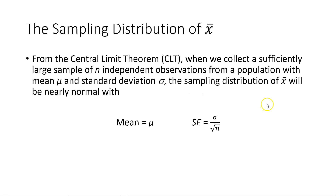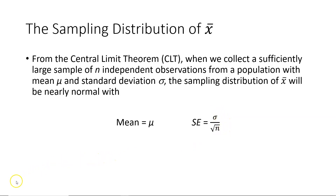Let's start by talking about the sampling distribution of sample means. From the central limit theorem, when we collect a sufficiently large sample of independent observations from a population with a mean of mu and standard deviation sigma, the sampling distribution of sample means will be nearly normal with a mean equivalent to the population mean and a standard error equal to the standard deviation of the population divided by the square root of the sample size.